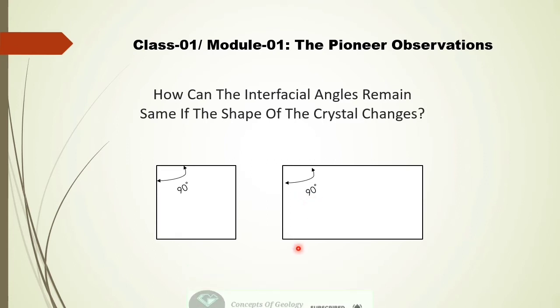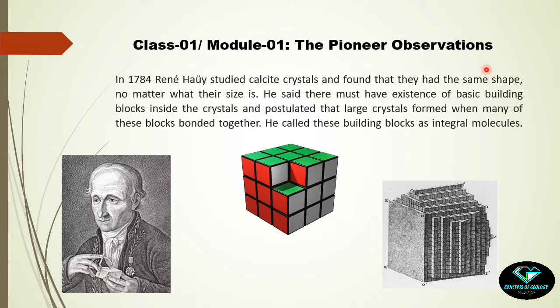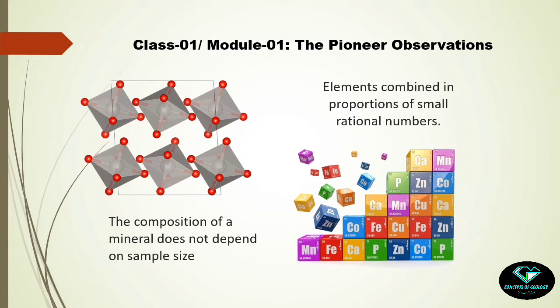This explains how interfacial angles can remain the same even if the shape of the crystal changes. Steno studied the external morphology of crystals at a pioneer stage, but in 1784 René Haüy studied calcite crystals and found they had the same shape regardless of size. He said there must be basic building blocks inside a crystal and postulated that large crystals form when many of these building blocks bond together. He called these building blocks 'integral molecules.' This idea was supported by Berzelius et al., who established that the composition of a mineral does not depend on the sample size — meaning there must be a basic building block with a definite chemistry which, when repeated, makes a larger crystal.